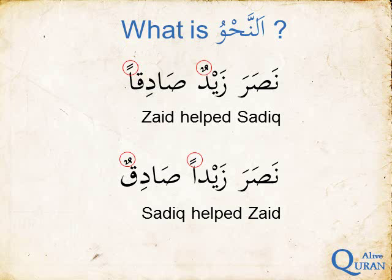In fact, for the first sentence Nasara Zaidun Sadiqan, you could also say Nasara Sadiqan Zaidun, or Sadiqan Nasara Zaidun, or Zaidun Nasara Sadiqan. All of these have effectively the same meaning — Zaid helped Sadiq — because Zaid retains the -un sound regardless of word order.